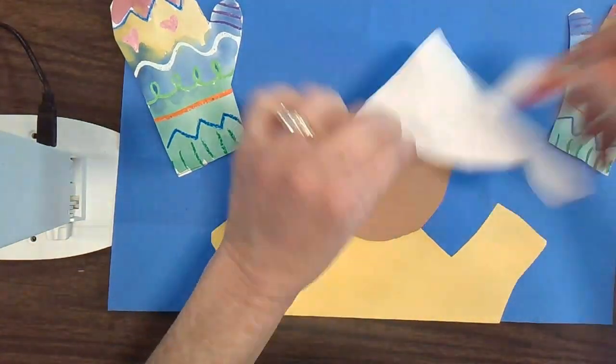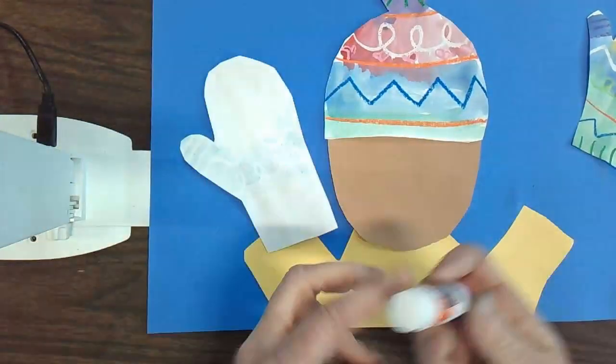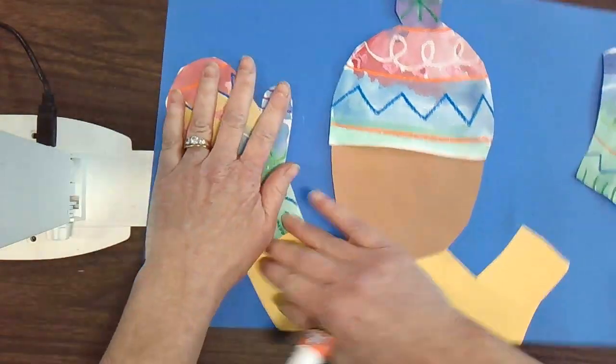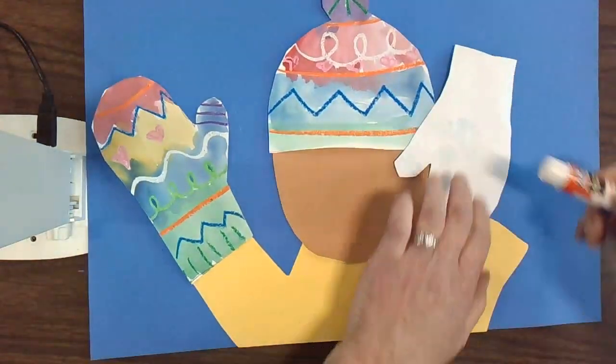You're going to add the hat so that the flat part of the hat matches up with the flat part of the head. You're going to glue on the mittens, both mittens.